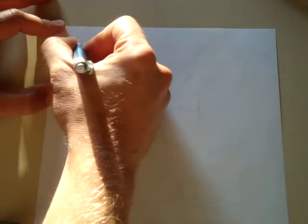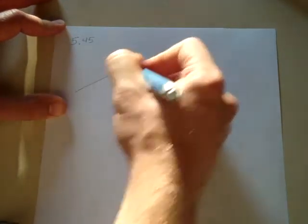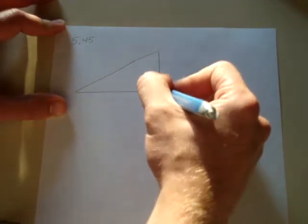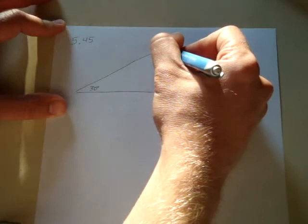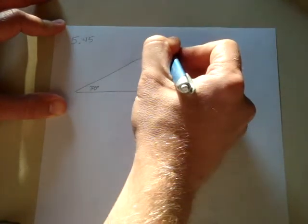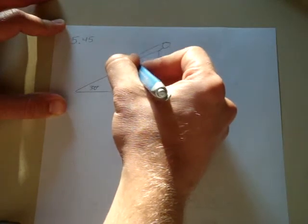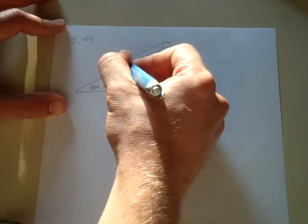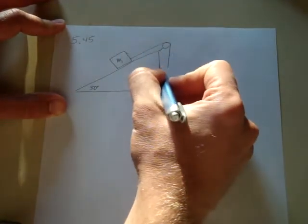This is from chapter 5, number 45. It deals with a ramp that is at an angle of 30 degrees and has a massless, frictionless pulley up here. Along this pulley there's a rope and it is attached to a mass M1 and another mass here that is hanging down, that is M2.